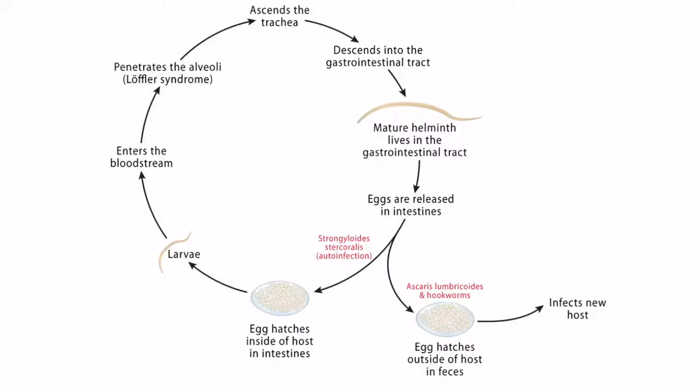This is a diagram showing the life cycle of the four parasites that cause Loeffler syndrome. You should know that Ancylostoma and Necator — the hookworms — exhibit a similar life cycle to Ascaris lumbricoides and Strongyloides stercoralis, which means they can cause Loeffler syndrome. The larvae penetrate the skin, enter the bloodstream, and then penetrate the lungs, causing pulmonary symptoms and eosinophilia. So remember: hookworms cause Loeffler syndrome.